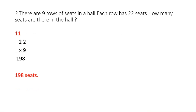Next question, Question 2. There are 9 rows of seats in a hall. Each row has 22 seats. How many seats are there in the hall? Children, there are 9 rows of seats and each row has 22 seats. So here you have to find out the total number of seats in the hall. We will multiply 22 by 9.